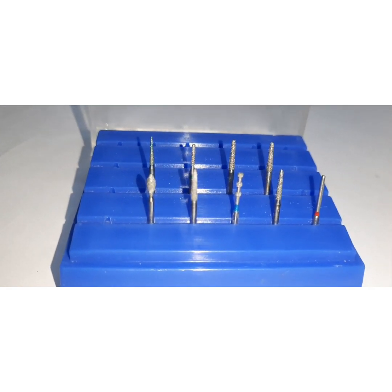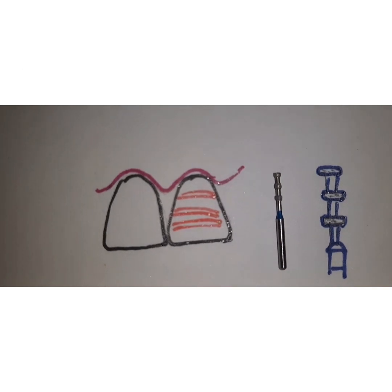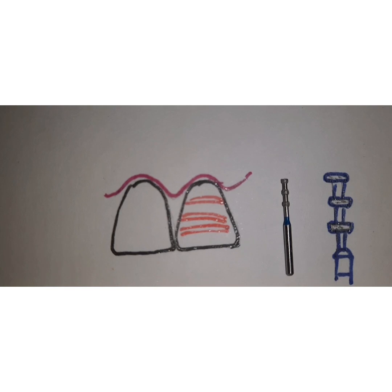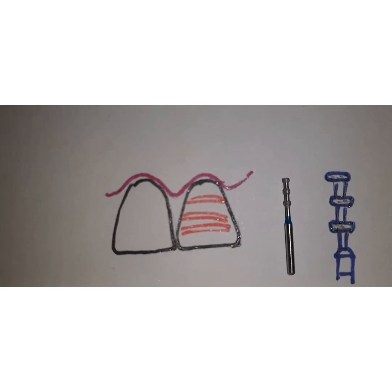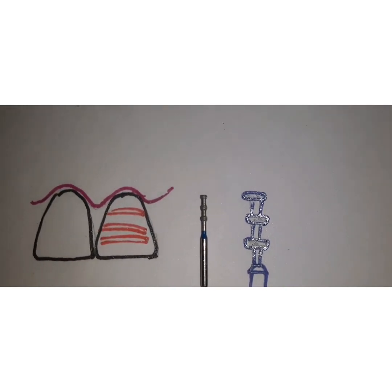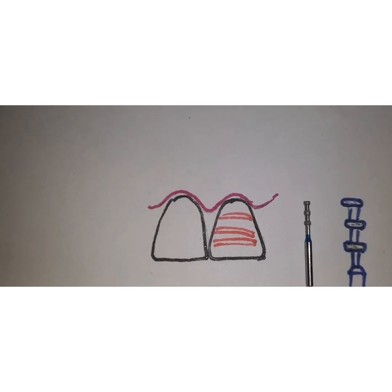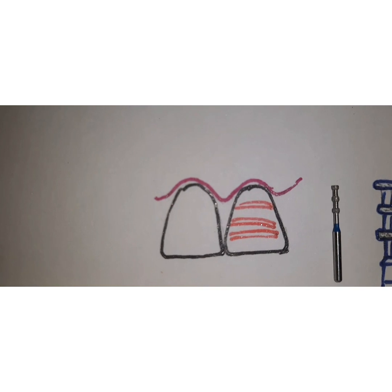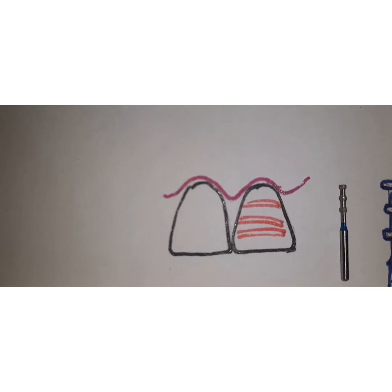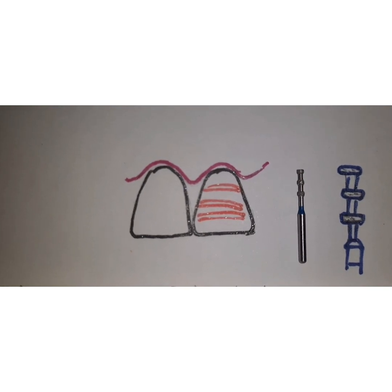The first step of tooth preparation is labial reduction. You use a depth cutter and make cuts of around 0.3 to 0.5 millimeters depth. A depth cutter of 1.6 millimeters diameter can be used, where the shaft is 1 millimeter but the extensions are 0.3 millimeters on either side. Place the depth cutter onto the tooth surface and go until the shank touches the tooth structure, confirming a depth of 0.3 millimeters. Other depth cutters provide 0.5 millimeters of depth depending on how deep the preparation needs to be.